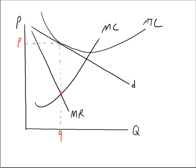However, at this quantity, this is also the average total cost. So price equals average total cost. Our economic profits are zero. Thanks for watching.